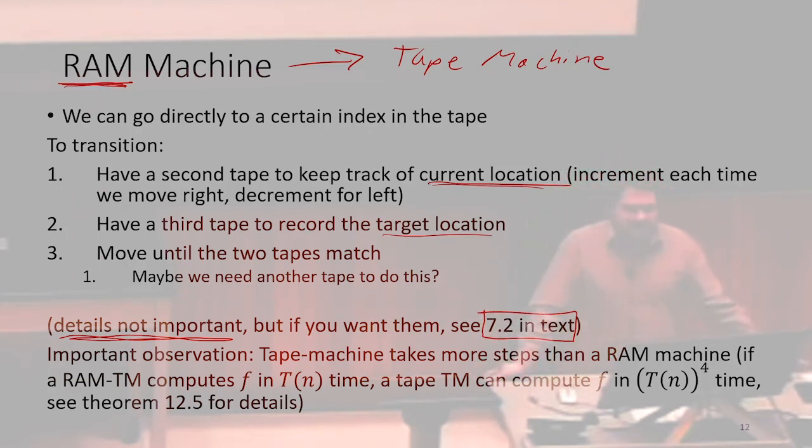However, we are making some things more efficient. If I wanted to know, for instance, is the last bit of the input a 1 or a 0, if I wanted to do that function with a tape machine, I'm going to have to scan all the way to the end of the input. So that's going to take linear time. With a RAM machine, I maybe can just jump directly to that index of the last bit in the input. Maybe now that's going to be constant time.